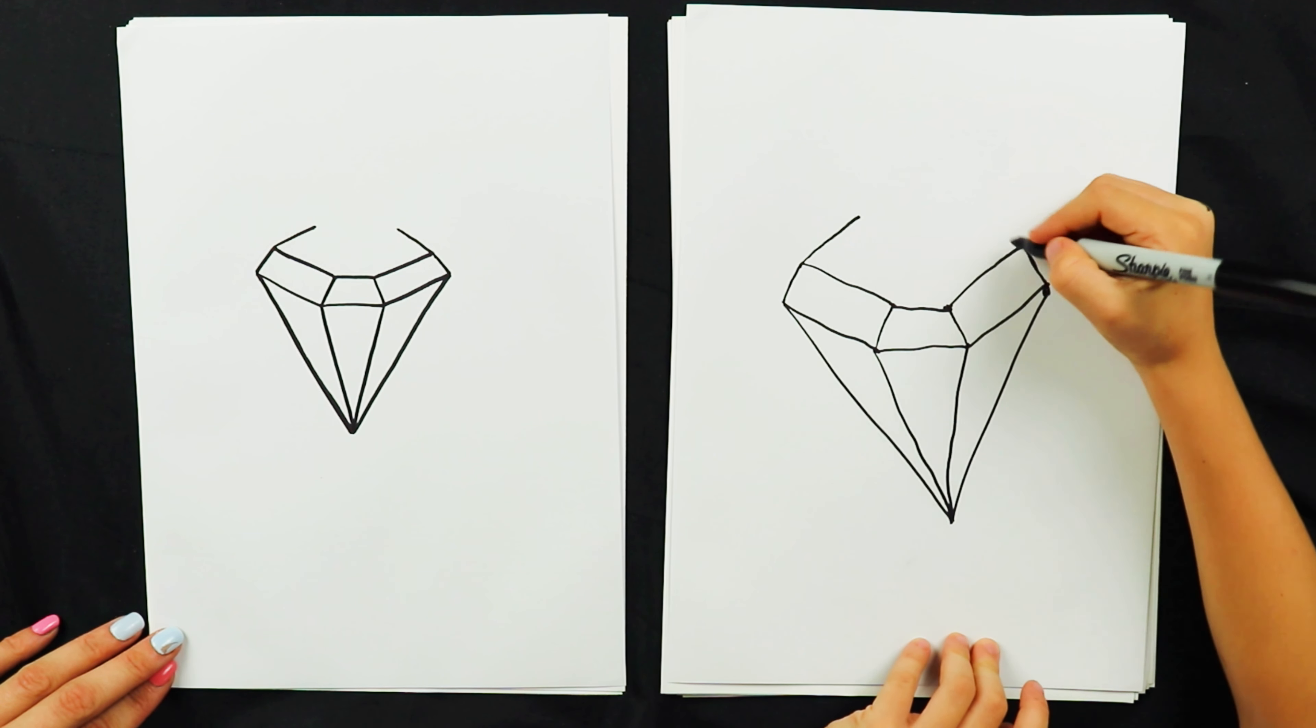Okay, now bring a line down from the first dot down to the bottom of this V. A nice straight line. So basically like a V? Mhm. And the same on the other side.